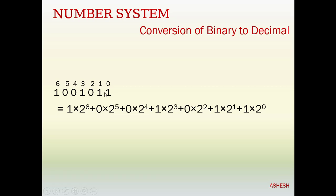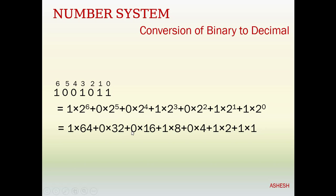Now evaluating: 2 to the power 6 equals 64, 2 to the power 3 equals 8, 2 to the power 2 equals 4, 2 to the power 1 equals 2, and 2 to the power 0 equals 1. So: 1 into 64 equals 64, 0 into 32 equals 0, 0 into 16 equals 0, 1 into 8 equals 8, 0 into 4 equals 0, 1 into 2 equals 2, 1 into 1 equals 1. Our answer is 75.